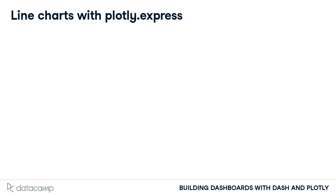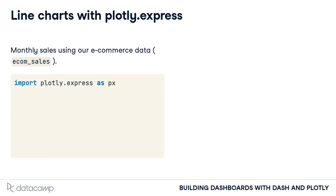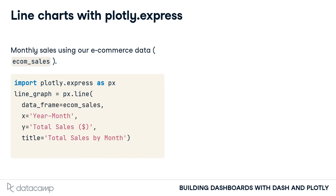Let's create a line chart using some global e-commerce data, where we would like to visualize the total sales in dollars each month. We firstly import Plotly Express as px by convention. Then we create the figure object using the relevant px sub-module — here it is px.line for a line chart. Plotly Express only requires us to specify the data frame and then column names as arguments. We have also added a title as a string. Finally, we use the show method to display the graph.